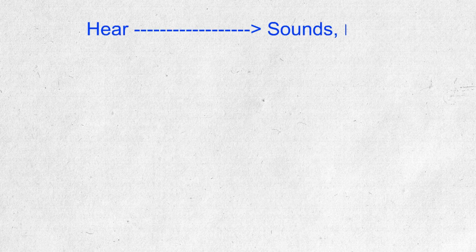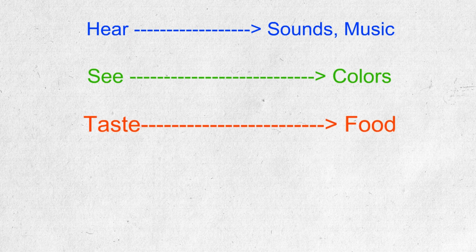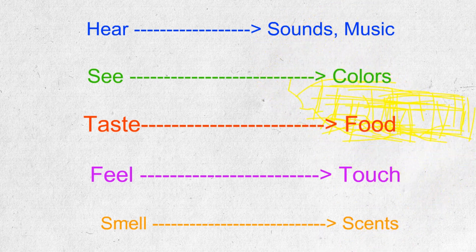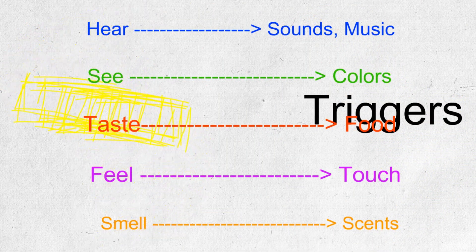Normally, we hear sounds, see colors, taste food, feel the touch, and smell different scents. These are called the triggers and these are the senses produced.